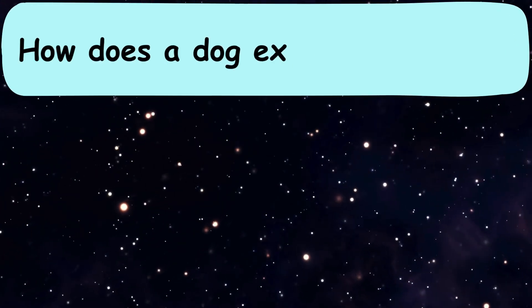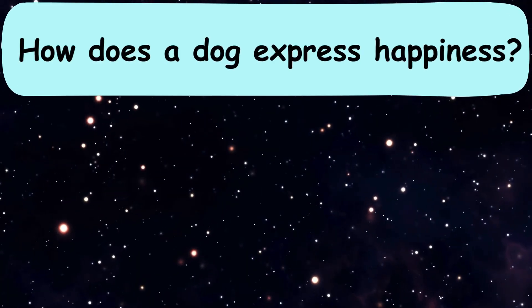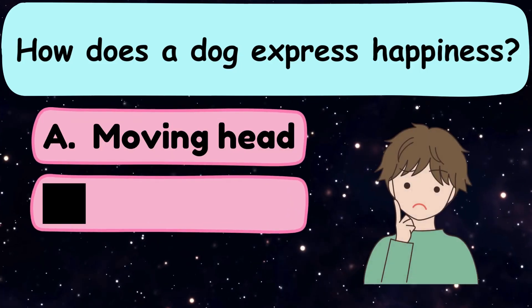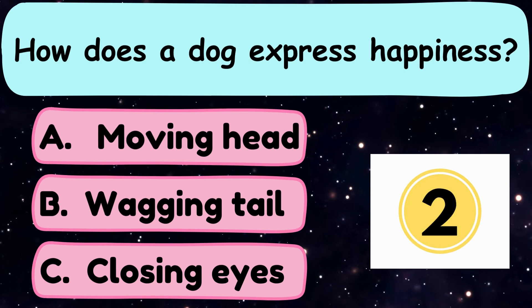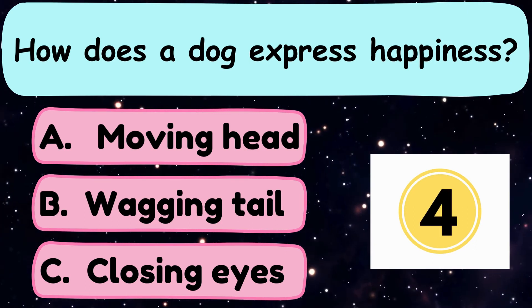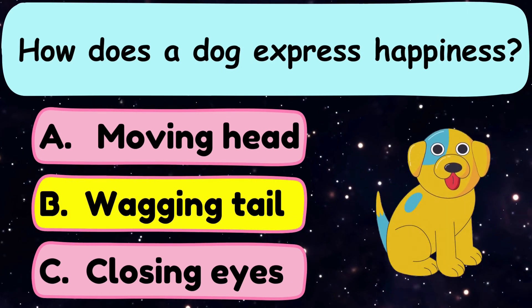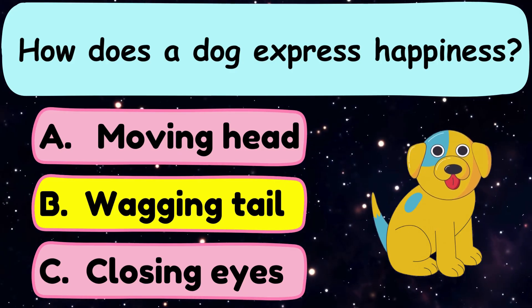Question number 31. How does a dog express happiness? A. Moving head, B. Wagging tail, or C. Closing eyes? The correct answer is option B. Wagging tail.